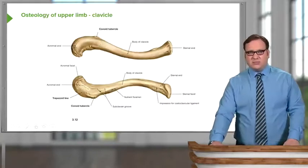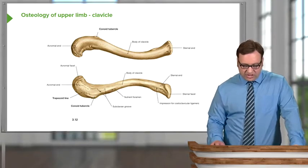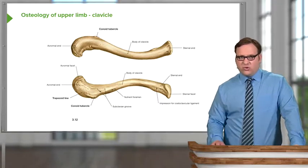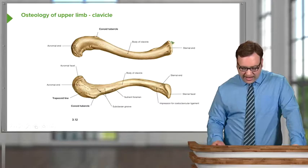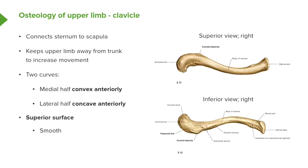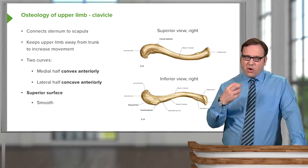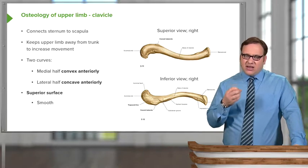Let's have a look at these bones in a little bit more detail, starting with the clavicle. On the screen we can see both a superior and an inferior view of the clavicle. We can see the sternal end, which articulates with the sternum, and the acromial end, which forms articulations with the acromion of the scapula. The clavicle connects the sternum to the scapula and is important as it keeps the upper limb away from the trunk, increasing movement.